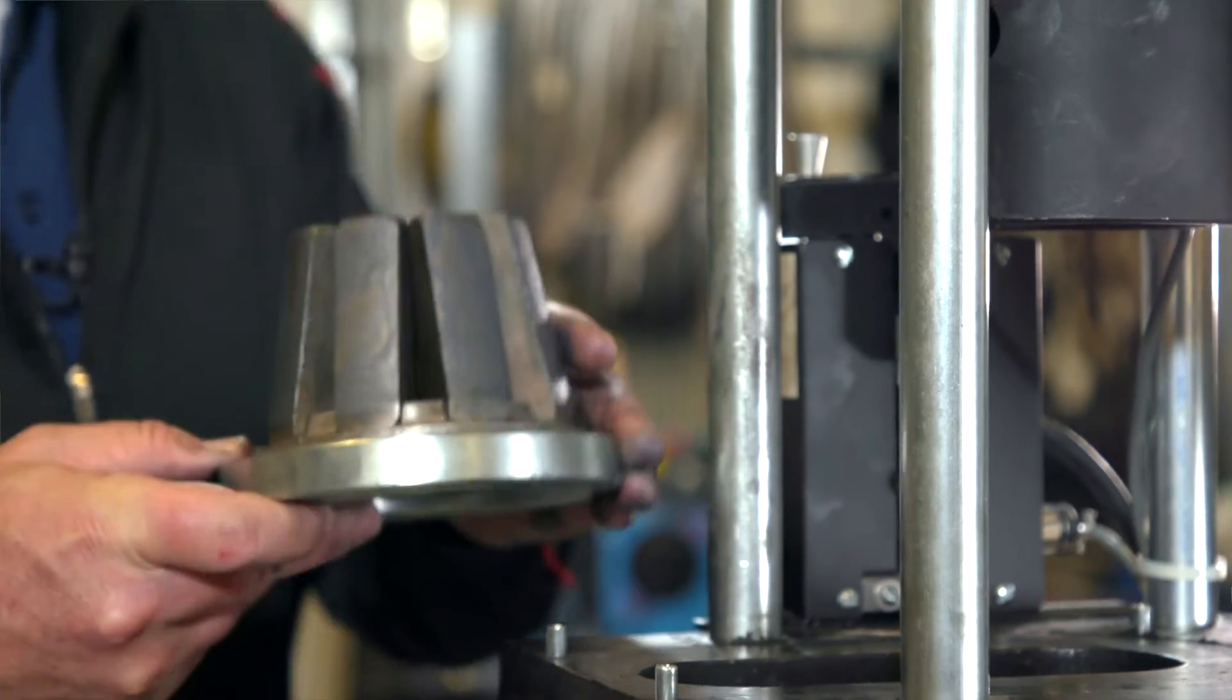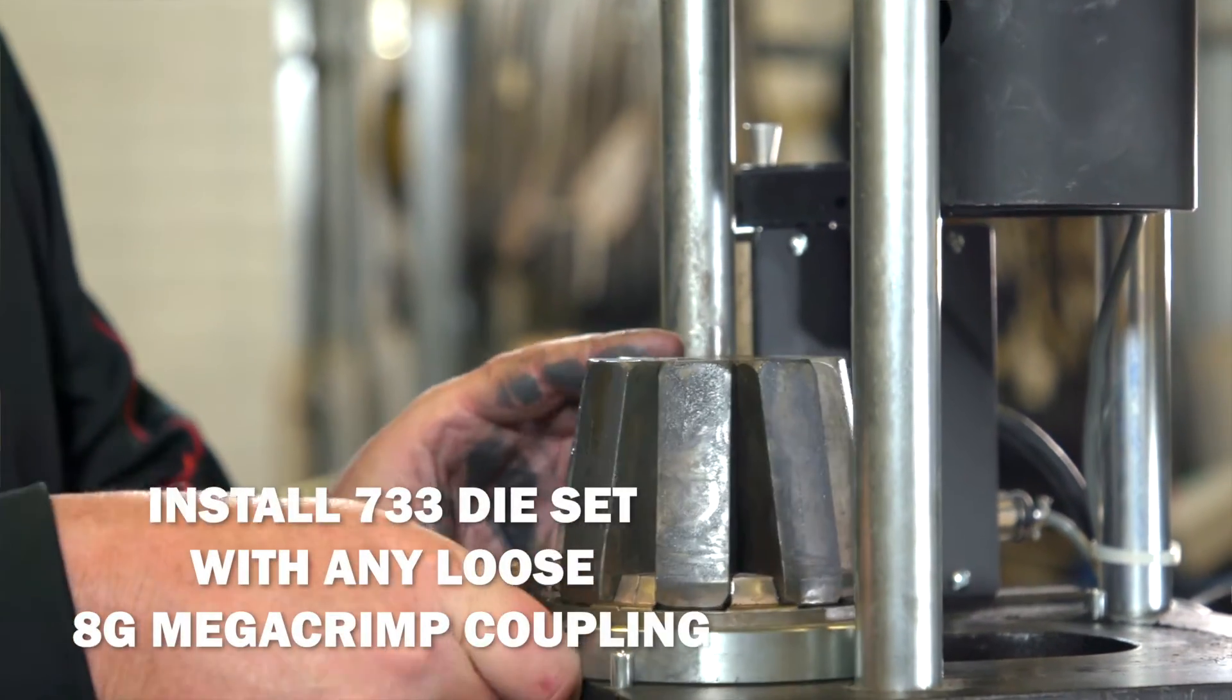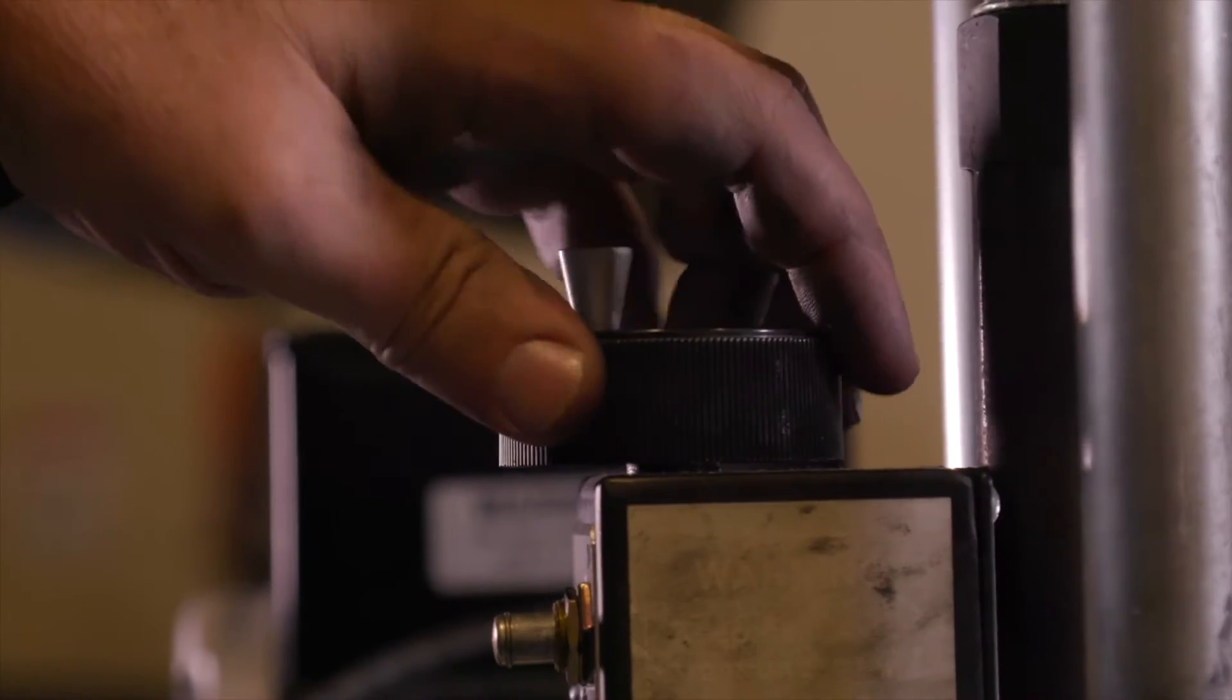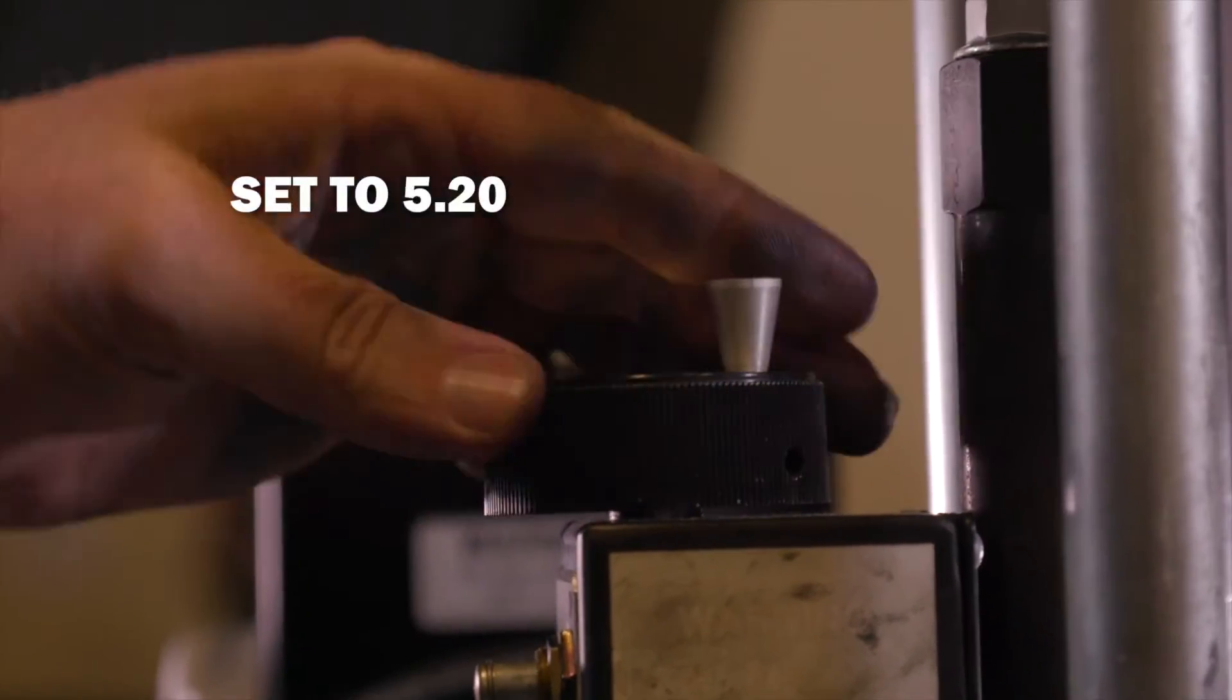To calibrate the machine, install the 733 die set and use any loose 8G mega crimp coupling to crimp. Set the digital readout setting to 5.20.